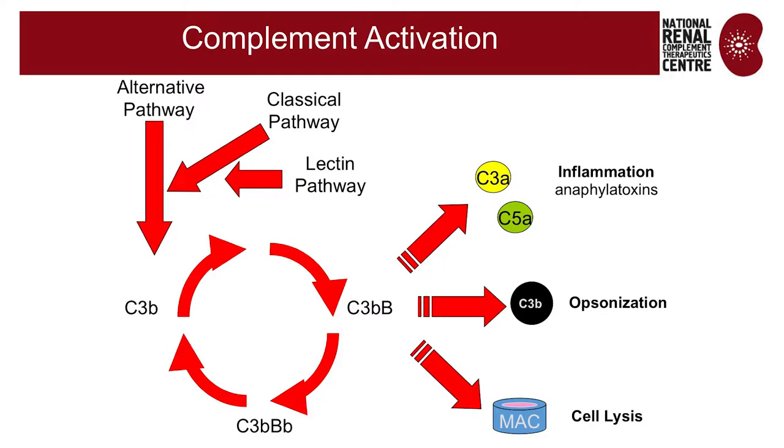The alternate pathway of complement is triggered by both the classical pathway, by antibody activation, by the lectin pathway which is triggered by bacterial sugars, and is always on. As Kate said, it's an amplification loop where C3B binds to factor B, cleaved by factor D to give you C3BBB, and that continues to cleave C3.